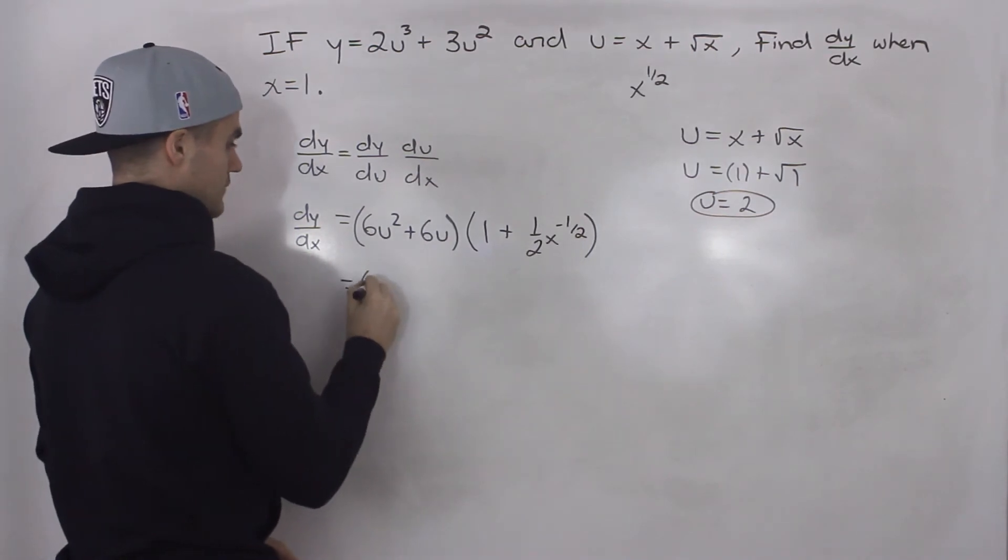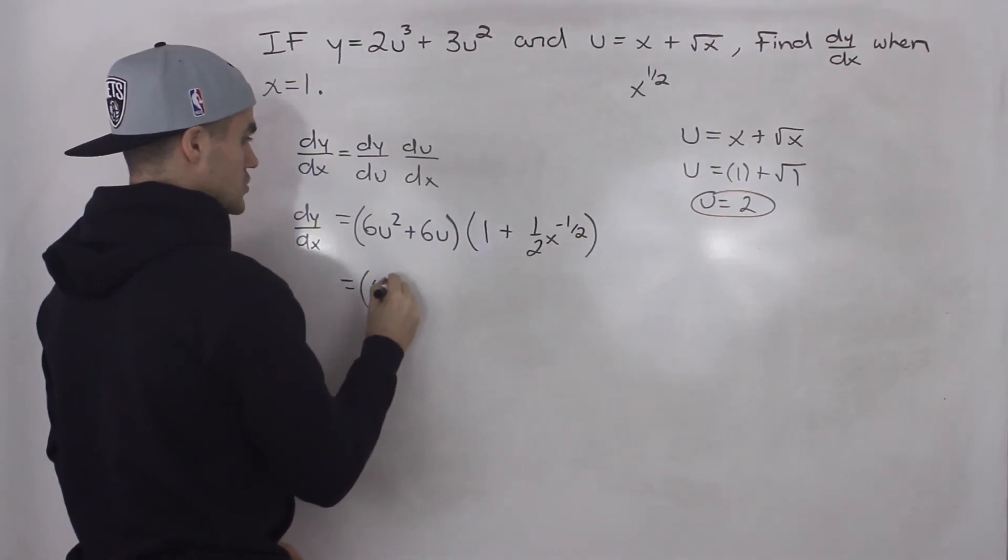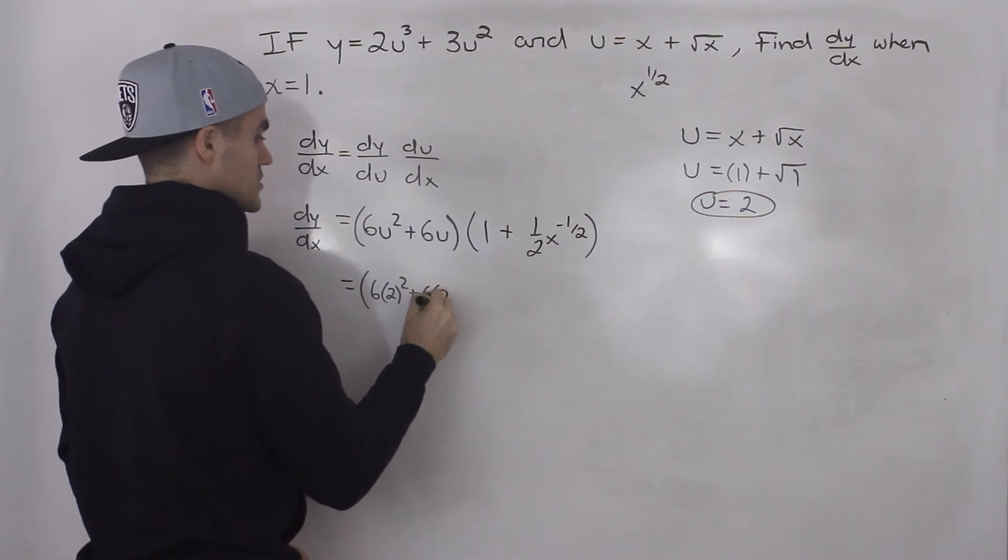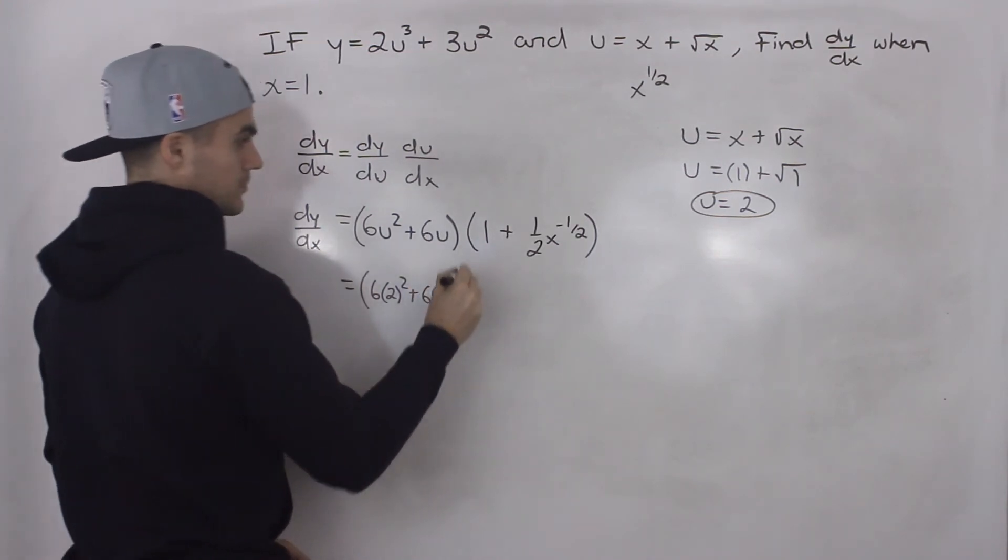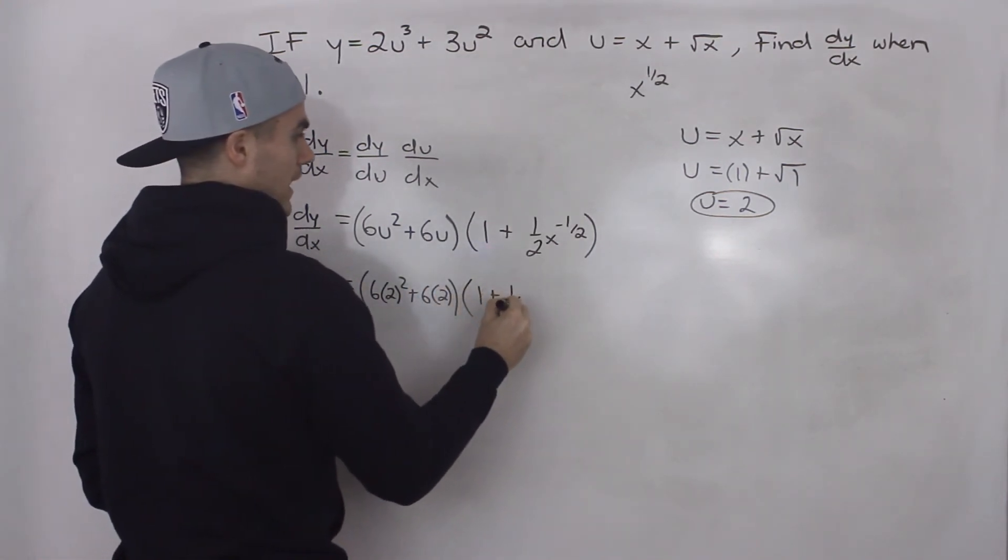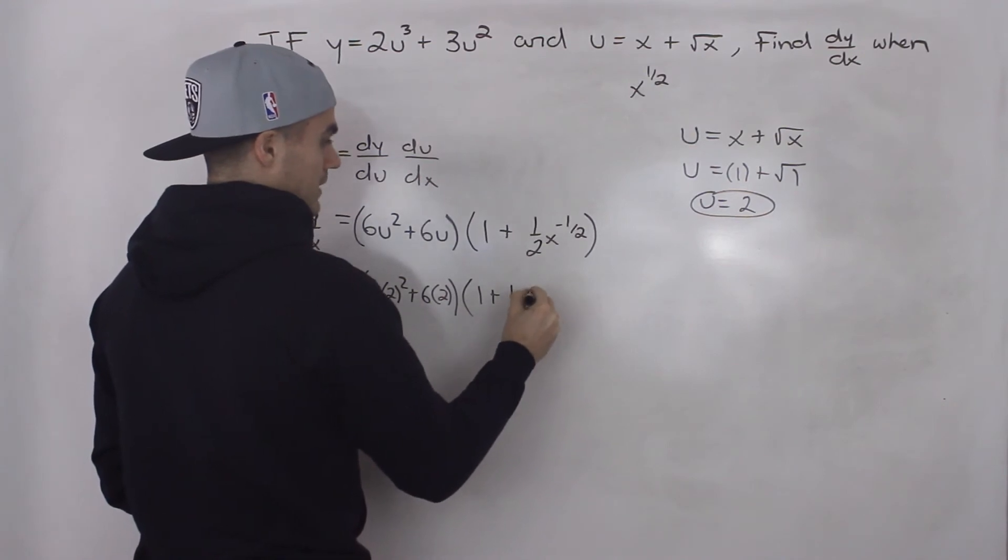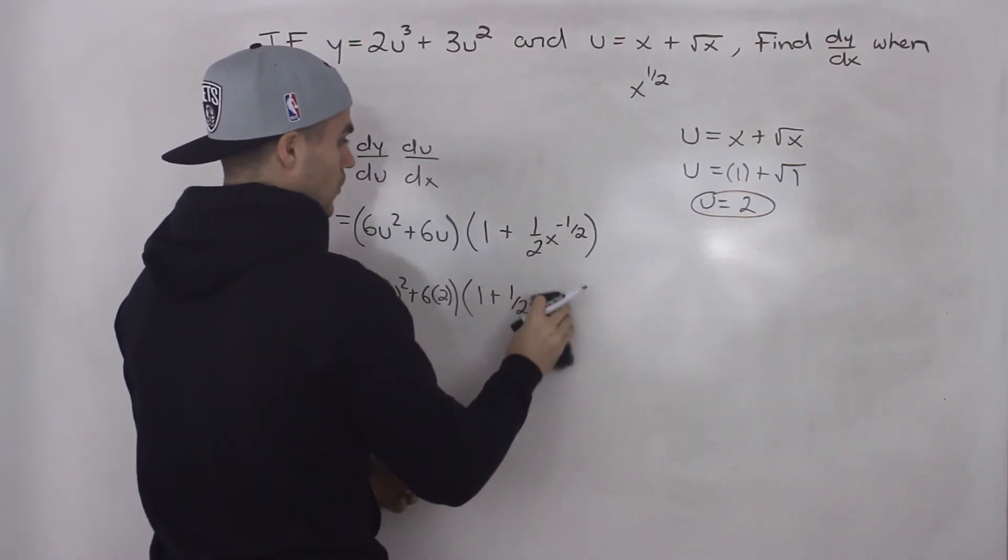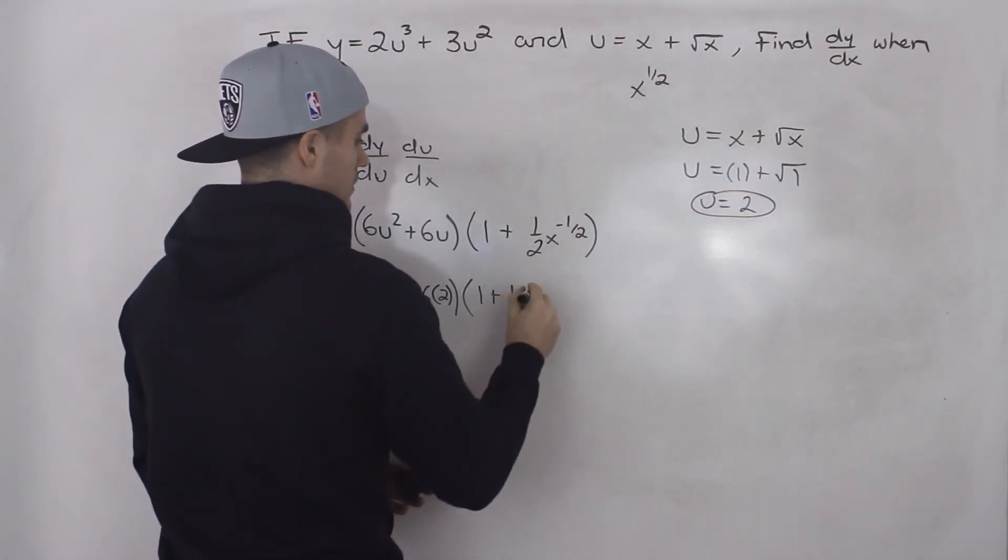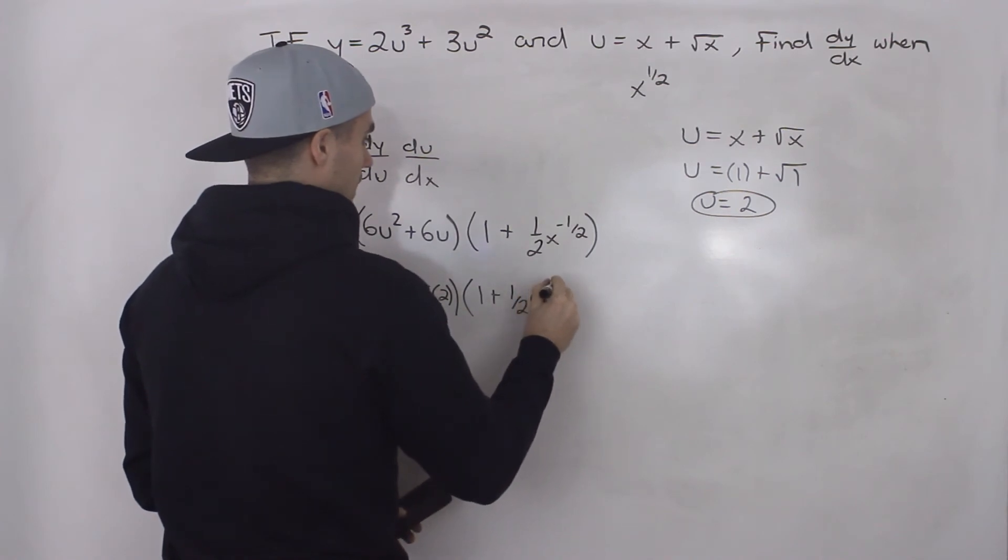So we would have 6 times 2 squared plus 6 times 2, multiplied by 1 plus 1 half, or rather 1, 1 to the power of negative 1 half.